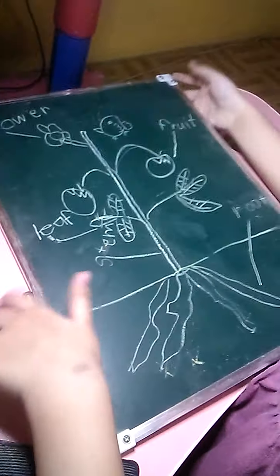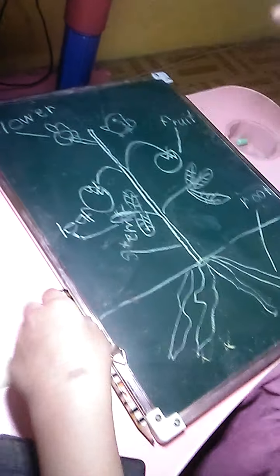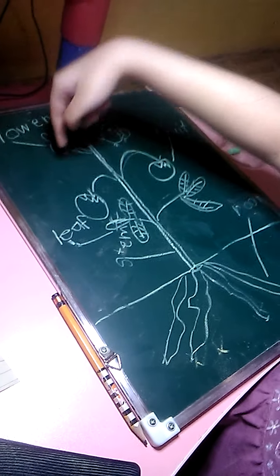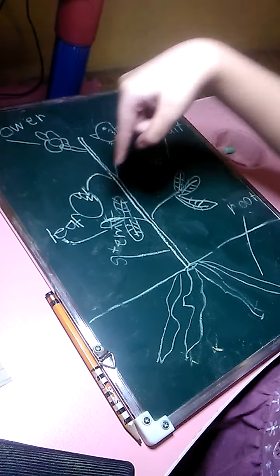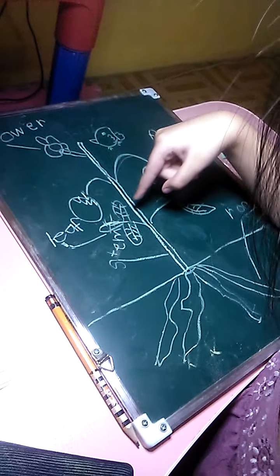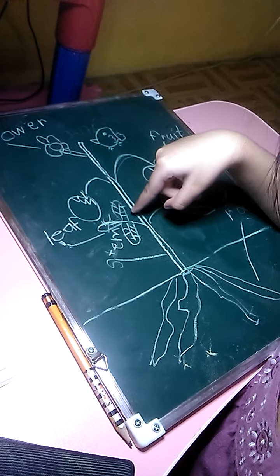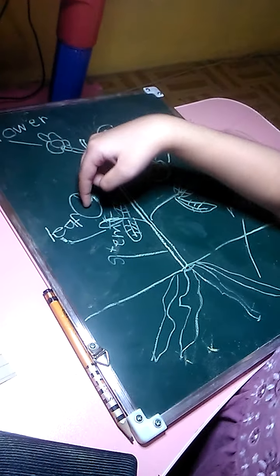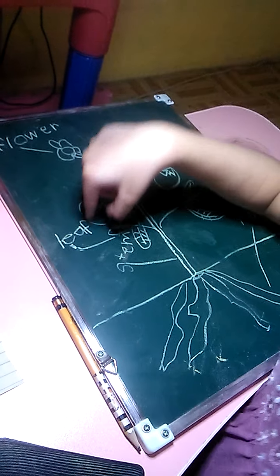Okay, so what are the parts of the plants? Flower. Point them. Flower. Mm-hmm. Fruit. Mm-hmm. Leaf. Oh! So, fruit. Mm-hmm.